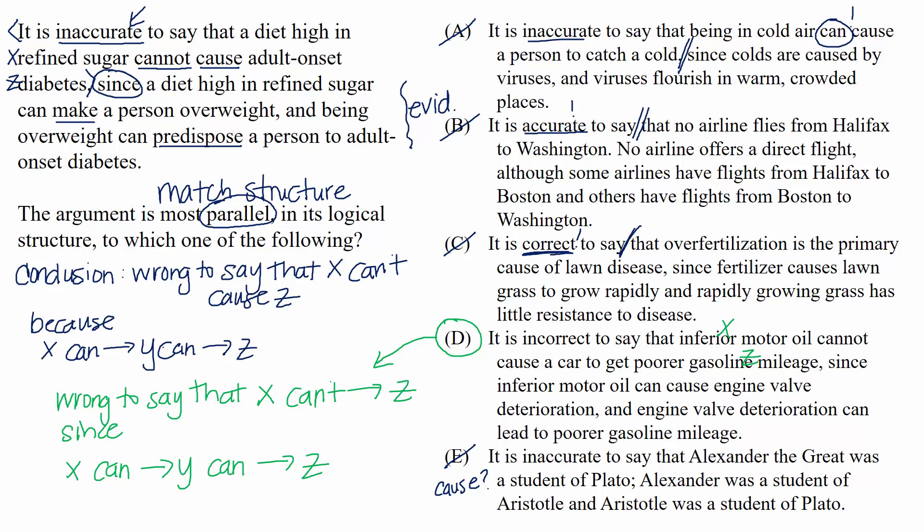So to recap, even though the topics in the choices will usually be different than the topic in a match-the-structure passage, it doesn't matter. Your job is to find the argument that reasons in a way that's similar to how the passage reasons. And a good way to do that is to break down the argument into its conclusion and support, and then eliminate a choice as soon as one of the pieces doesn't match its corresponding piece in the passage.